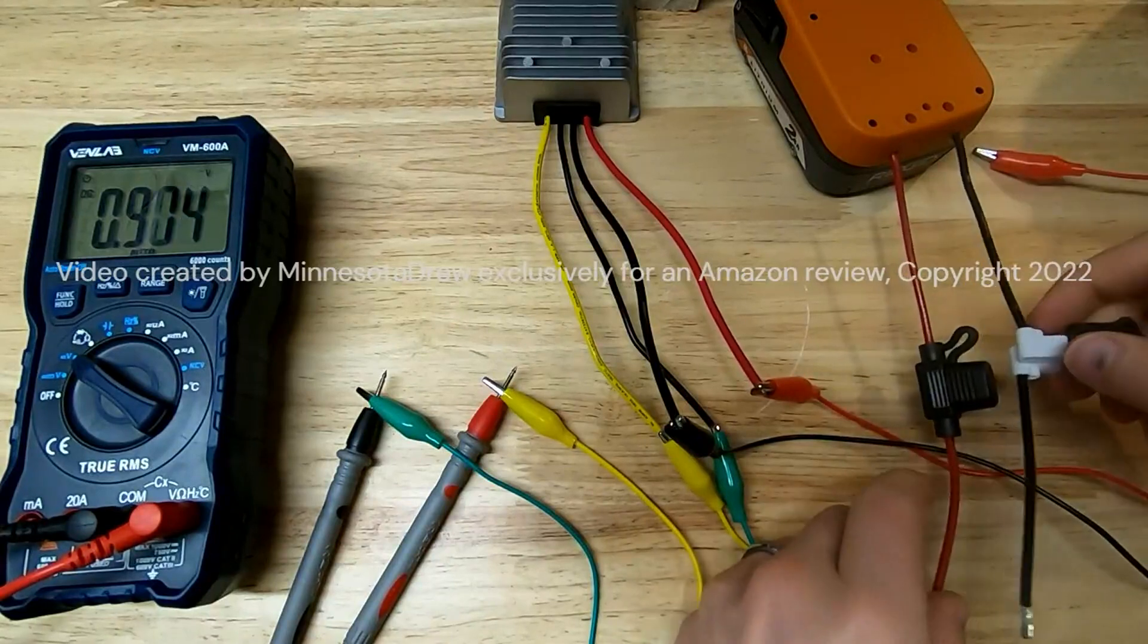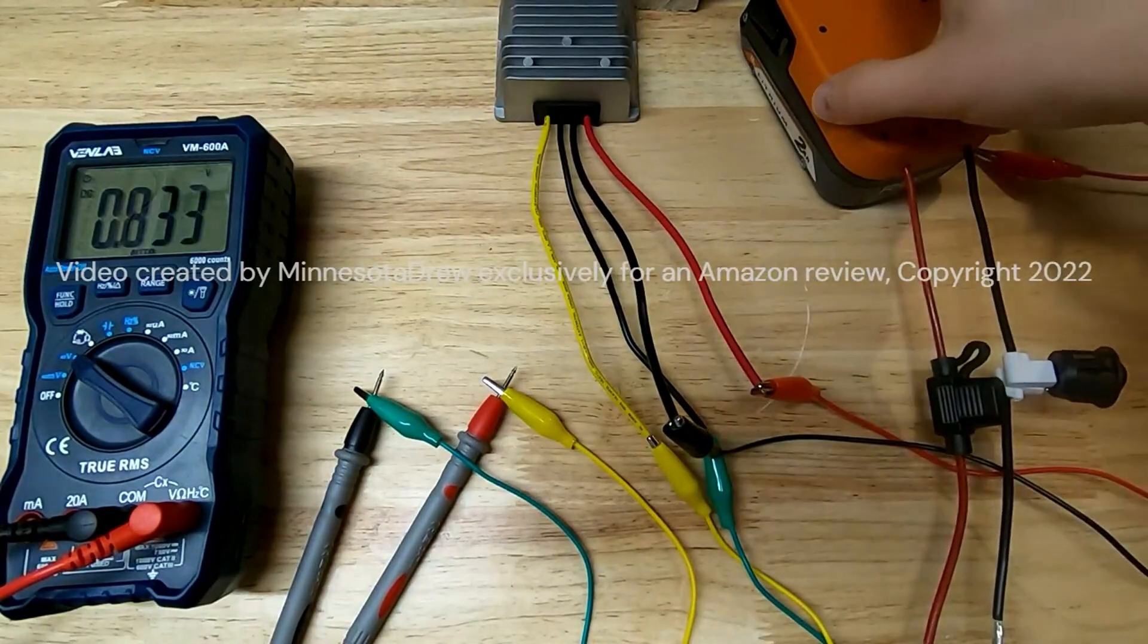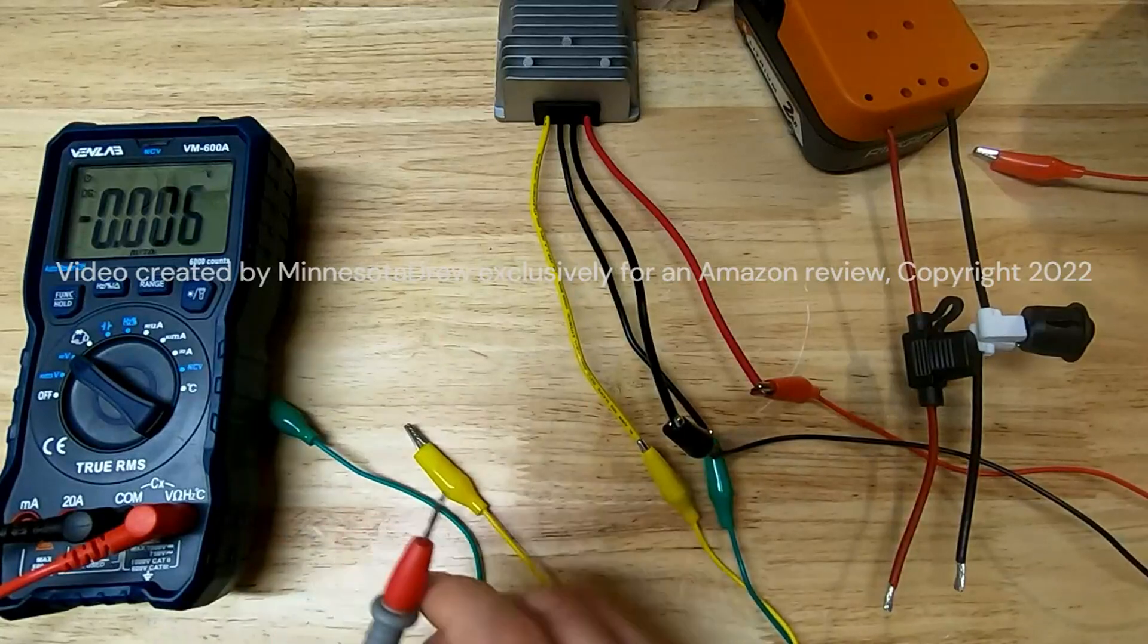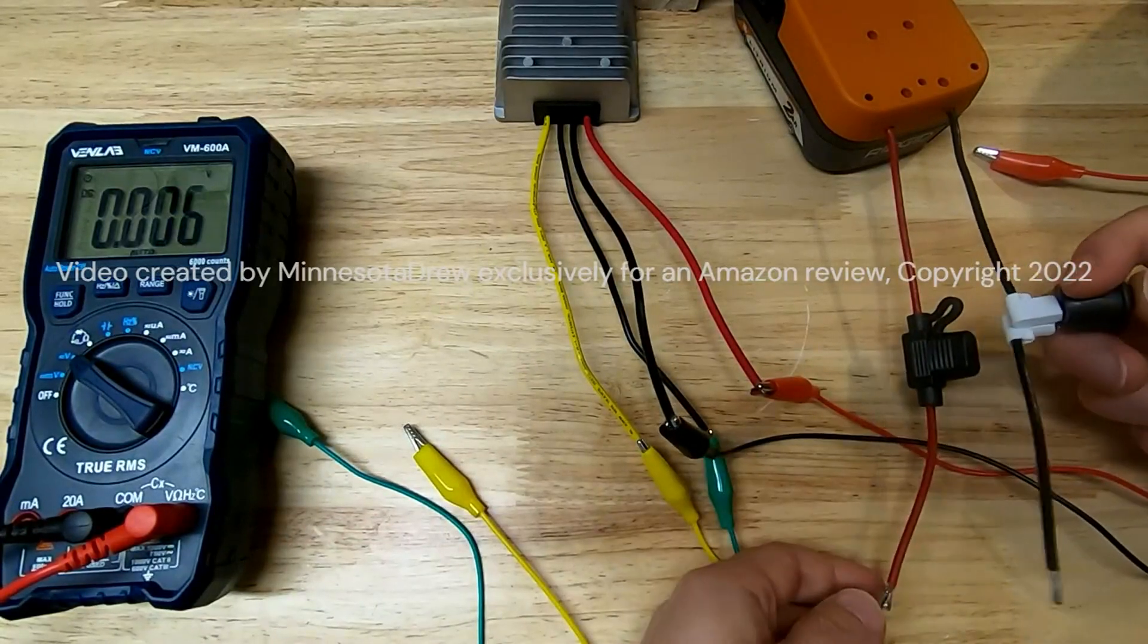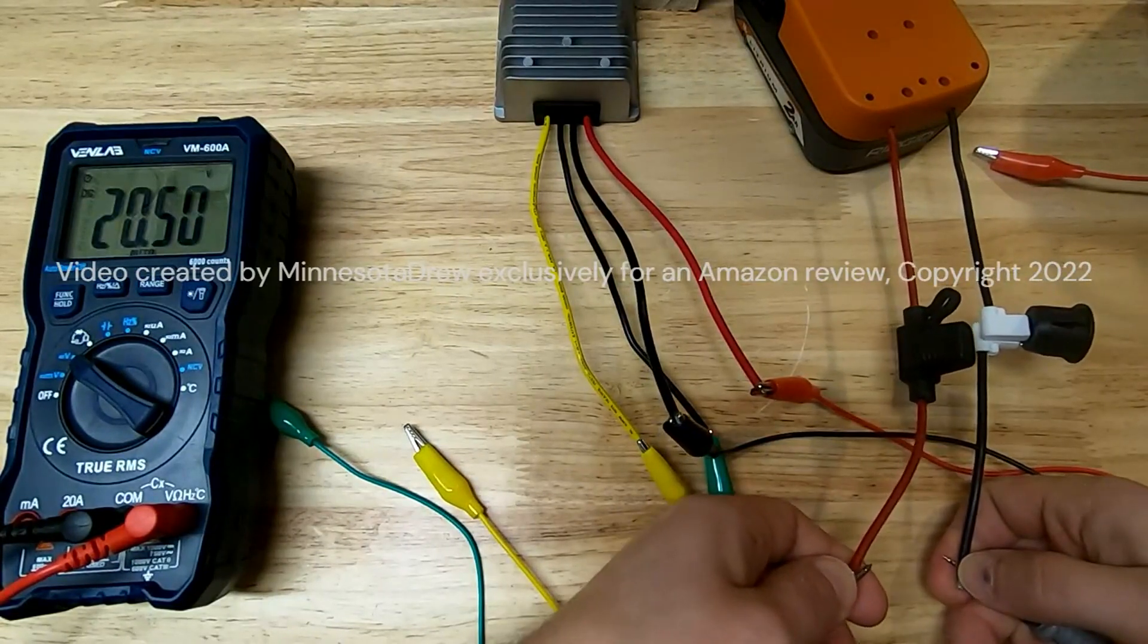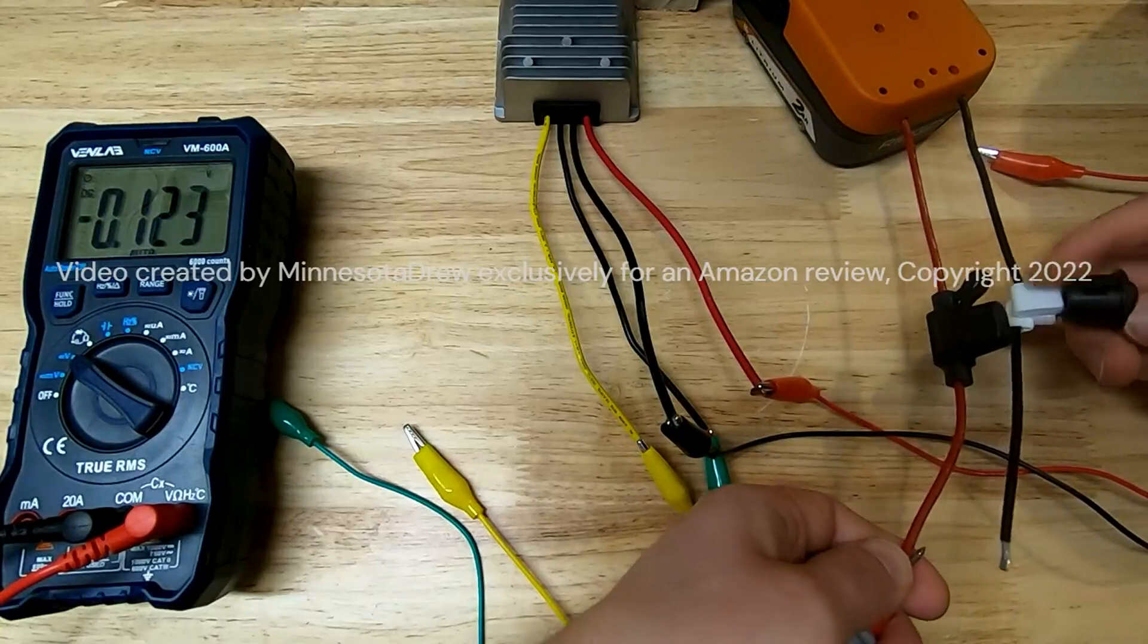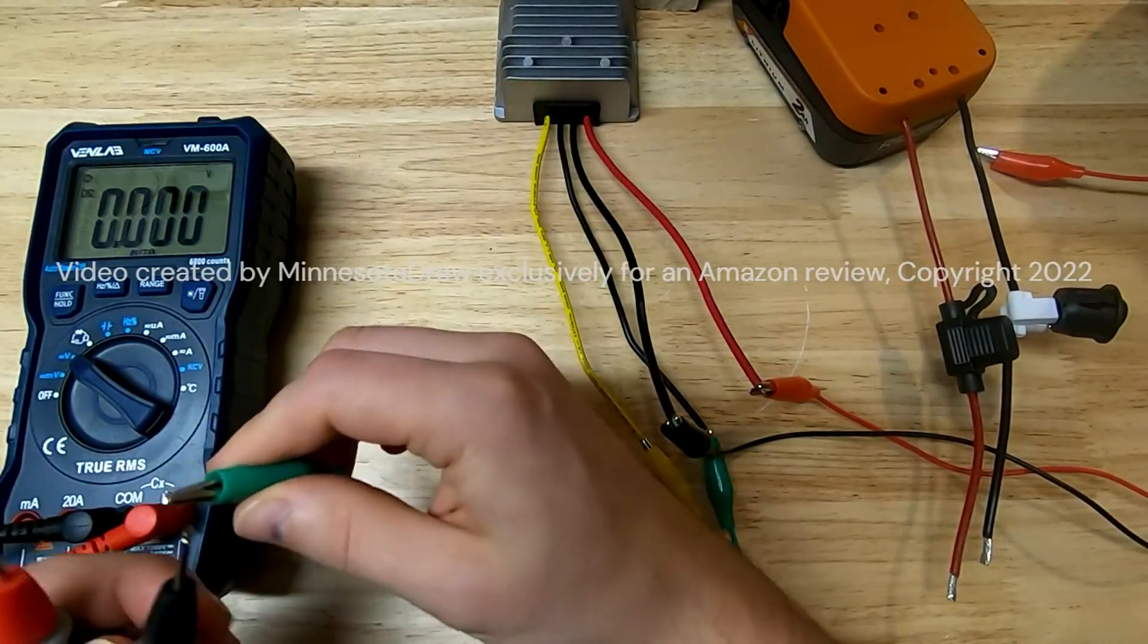We should probably check our output on the Rigid battery pack. Turn it on, don't let the wires touch. Yeah, it's fully charged so we're showing 20 and a half volts on that battery pack right now. That's about halfway up in the range there for our voltage regulator.